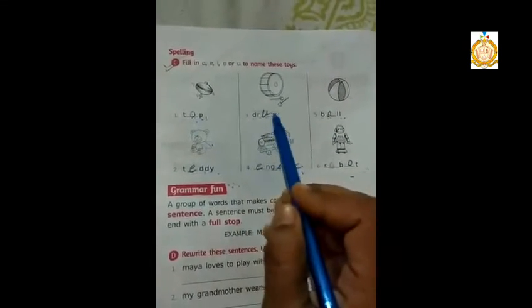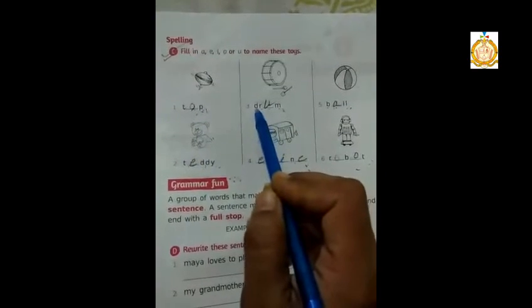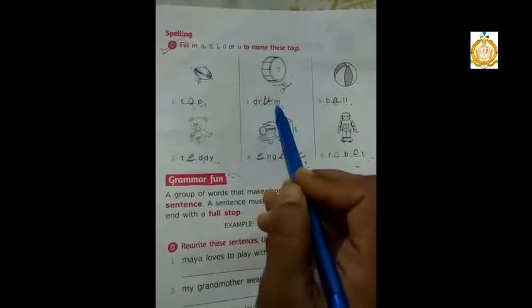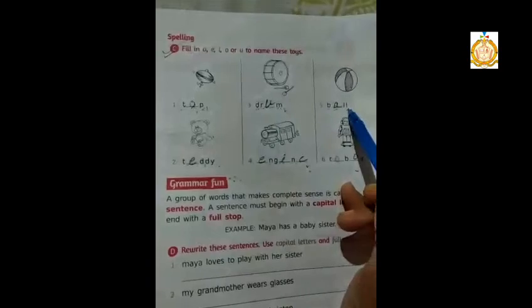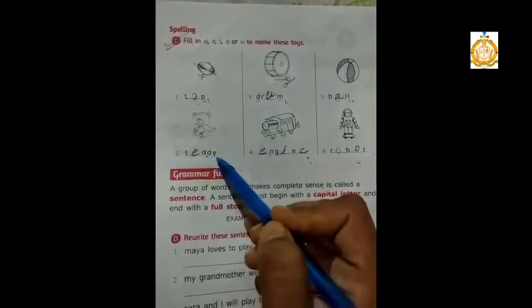First is top, T-O-P. Second one is drum, D-R-U-M. Next one is ball, B-A-double L. Next one is teddy, T-E-double D-Y.